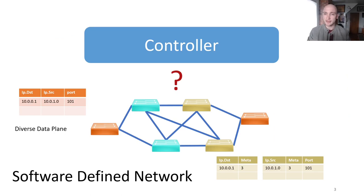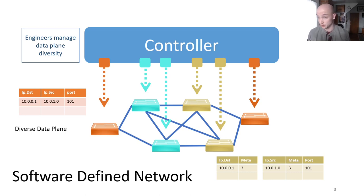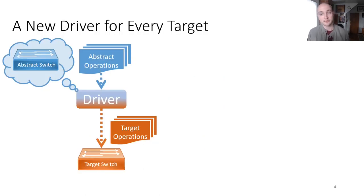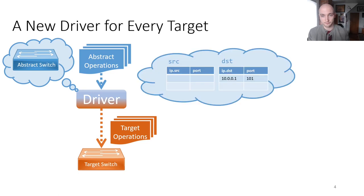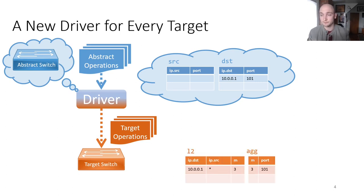However, with the advent of software-defined networking, the story changes. In a software-defined network, the control plane logic is logically centralized and manages a distributed data plane. These data plane devices now expose their implementation details directly to the controller, so network engineers need to write special purpose code to reason about the idiosyncratic behavior of each switch. These drivers translate controller-facing abstract operations on an abstract switch into target-specific operations on the target switch. For example, let's say that we have a two-table abstract pipeline where each table sets the output port based on the IP source or destination address respectively.